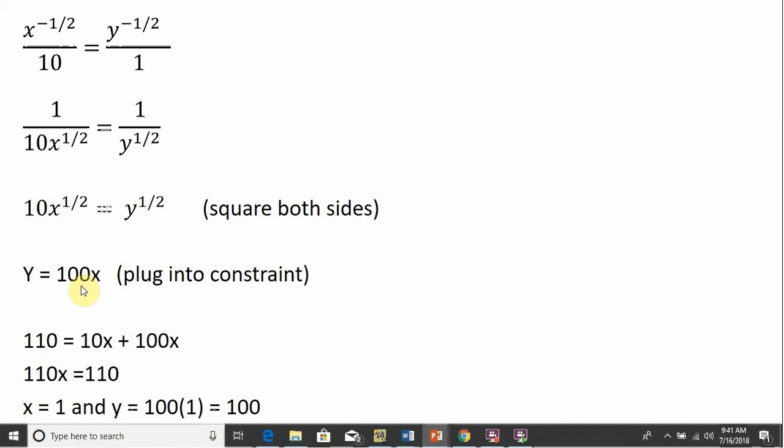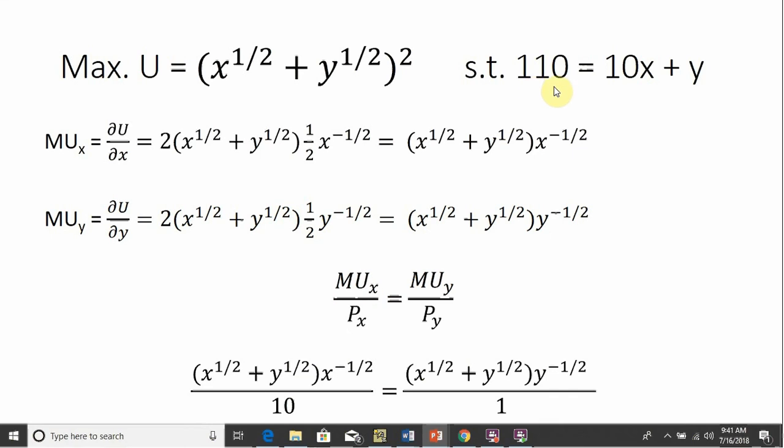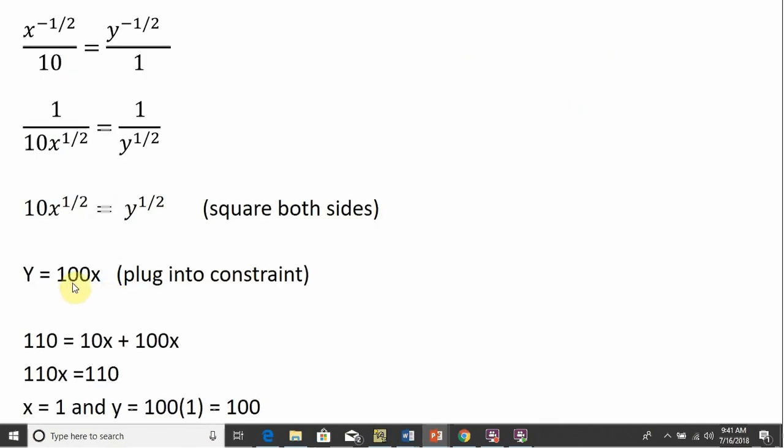The next thing we need to do is plug this into the budget constraint. So our budget constraint was 110 equals 10X plus Y. So for Y, I'm going to plug in 100X. And we'll get 110X equals 110. Dividing through by 110, X equals 1. I'll go ahead and plug that one back into this equation here where Y equals 100X. So Y equals 100. And that is our utility maximizing values for X and Y.